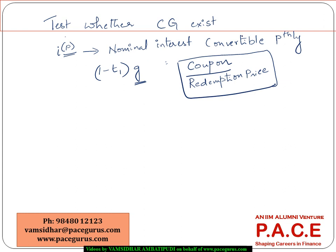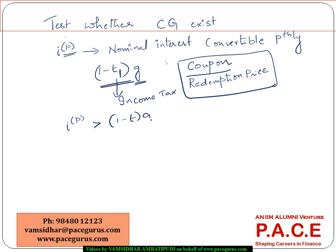Once you know the coupon value and the redemption price, compute g = coupon / redemption price. Multiply g by (1 - t_1), where t_1 is the income tax rate, to get the post-tax redemption yield. If i_p is greater than (1 - t_1) × g, we say that capital gains exist.